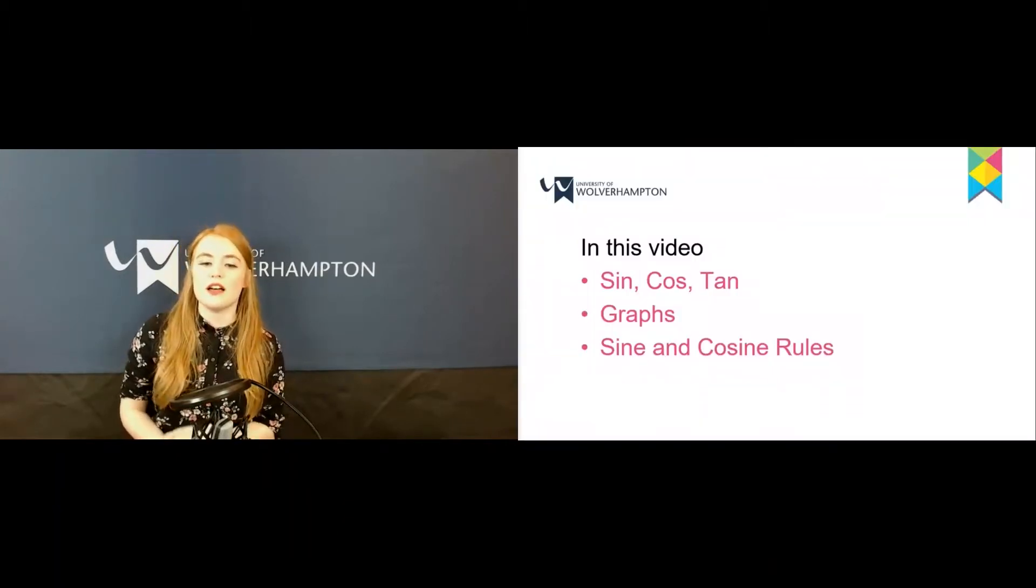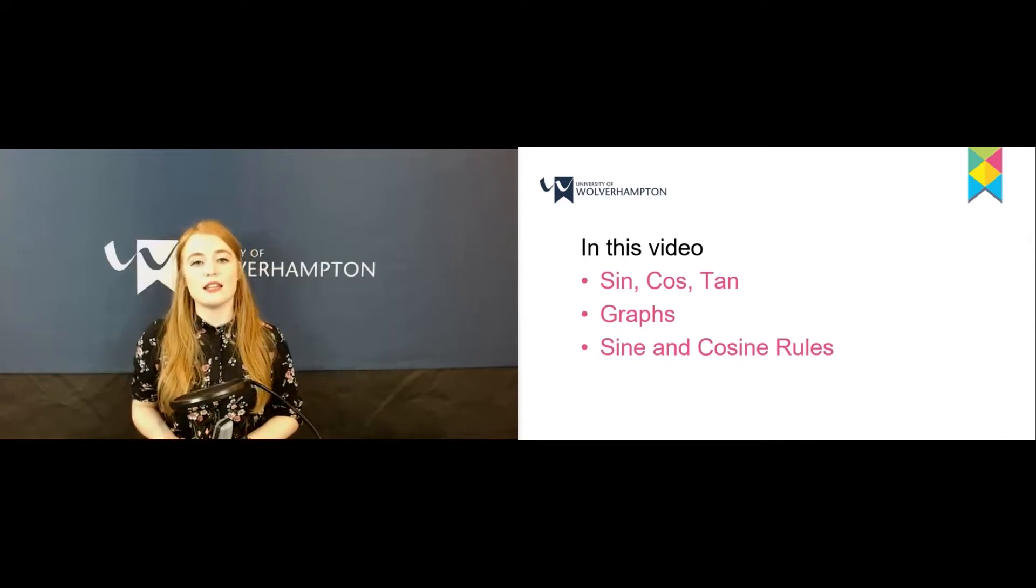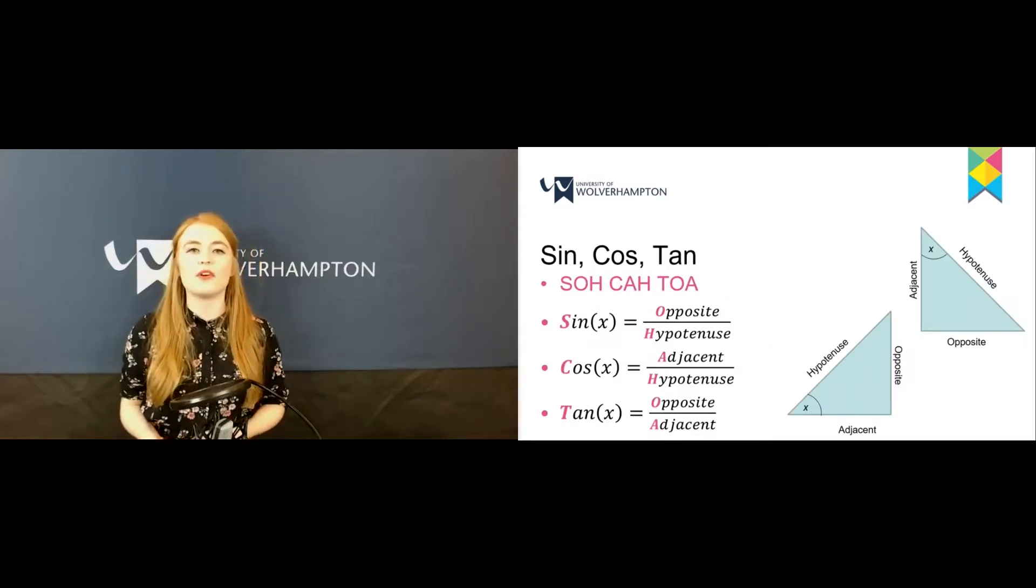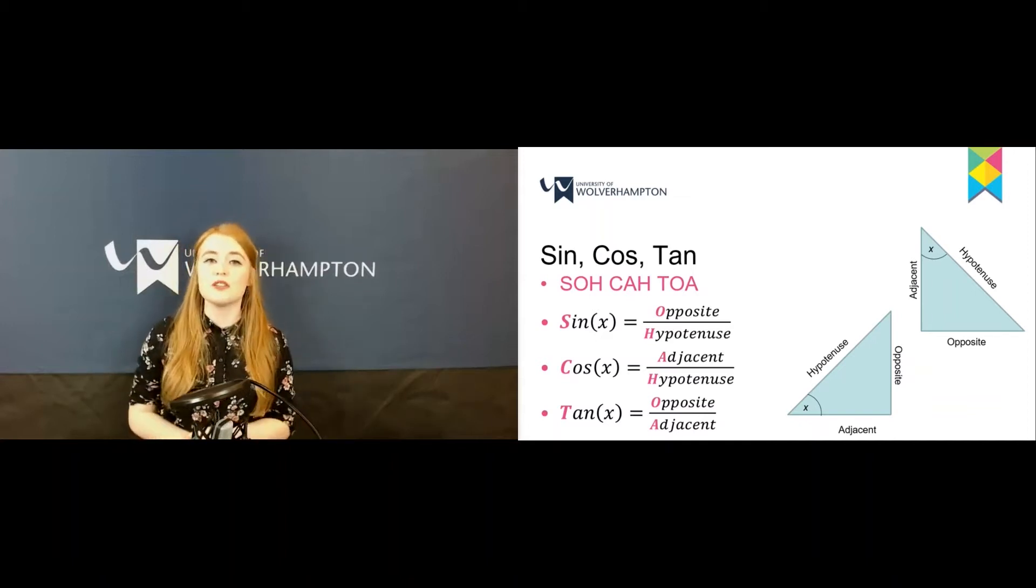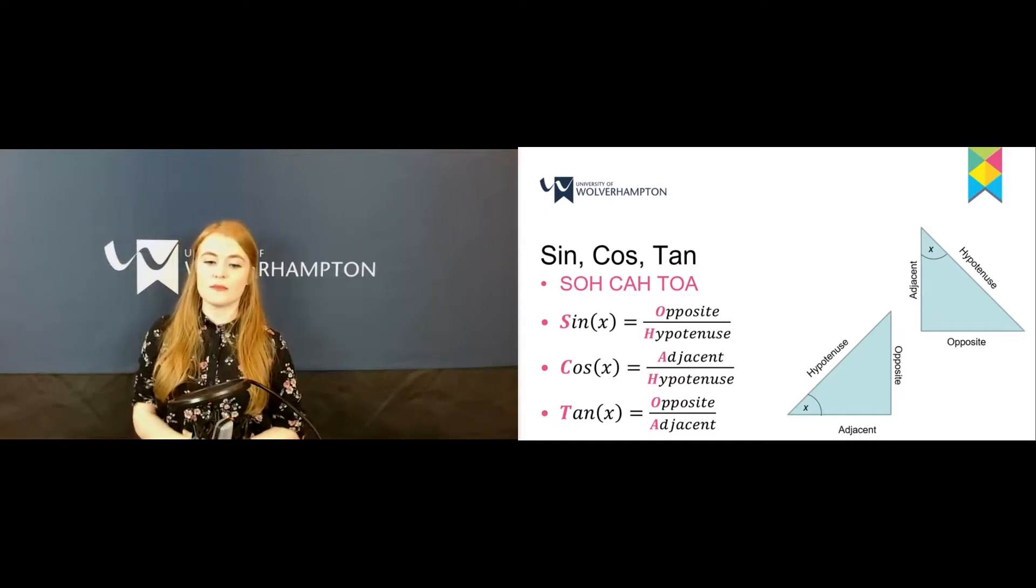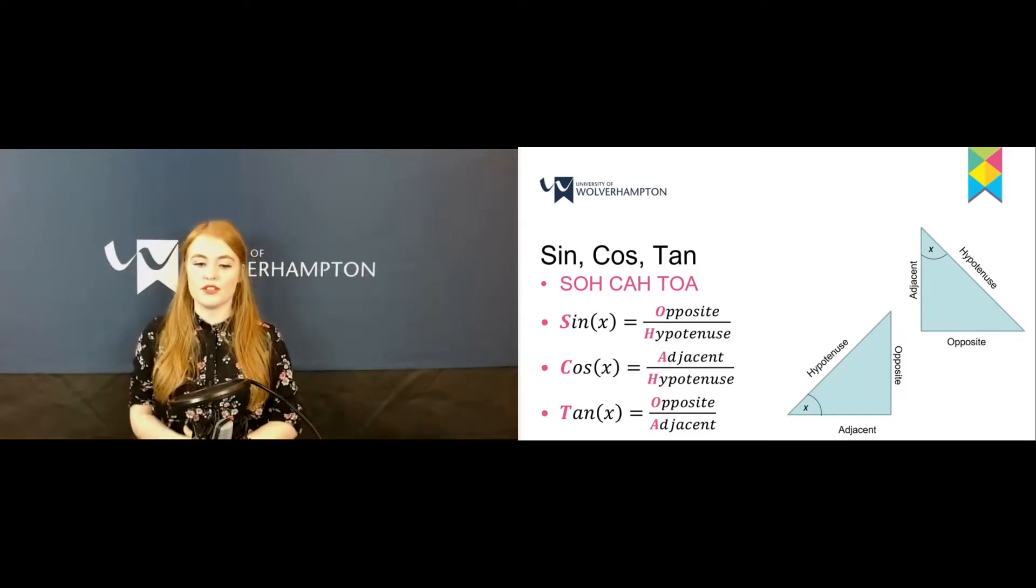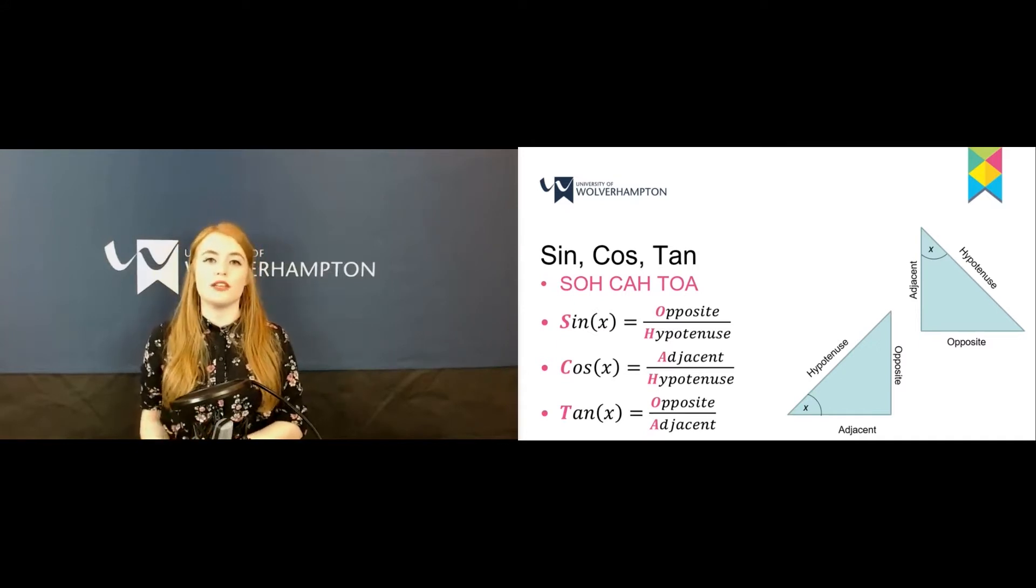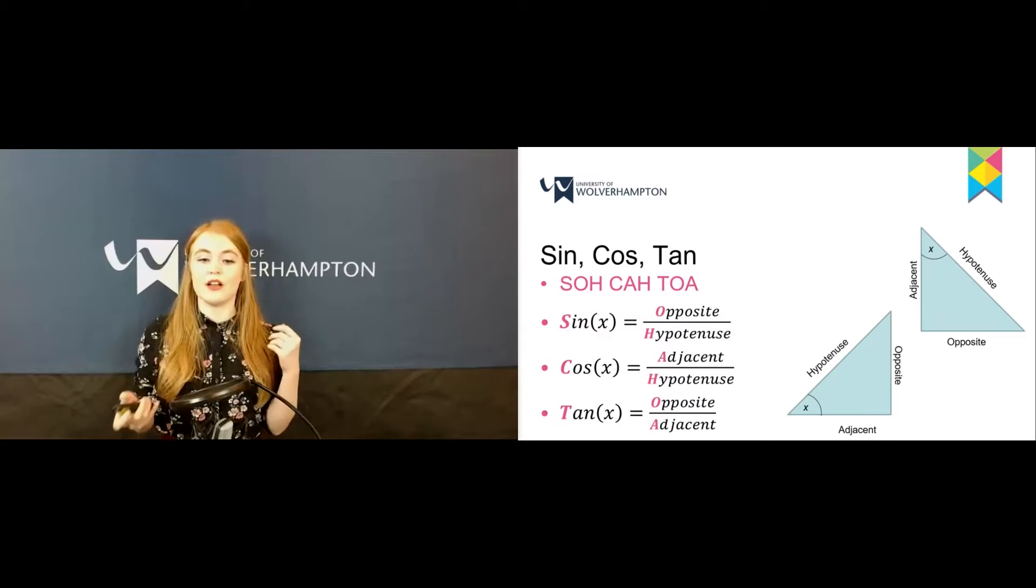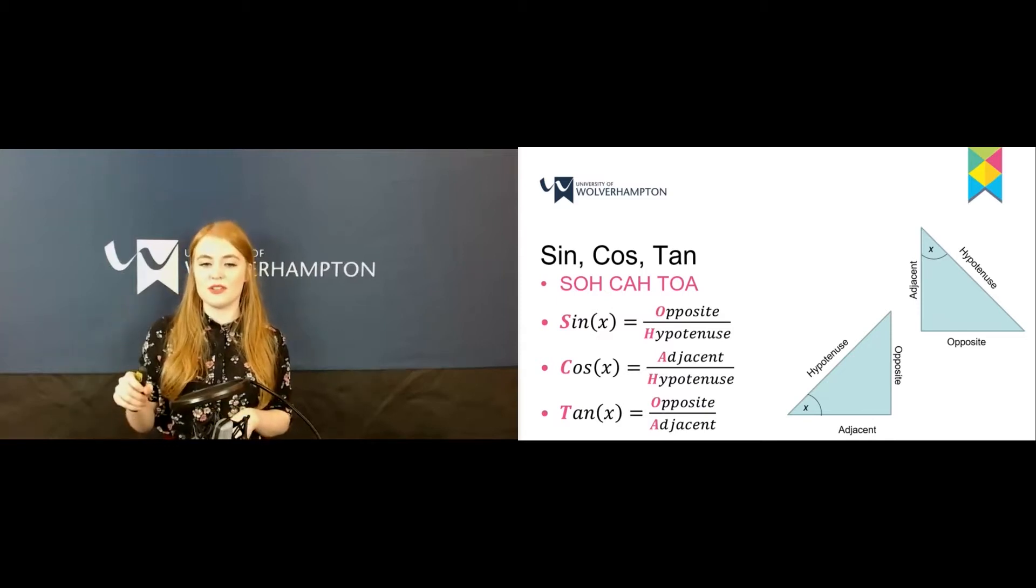In trigonometry there's sine, cosine, and tan, graphs, and the sine and cosine rules. When we have a triangle and want to figure out an angle or a side, we can use SOHCAHTOA. Sine is opposite over hypotenuse, cosine is adjacent over hypotenuse, and tan is opposite over adjacent.